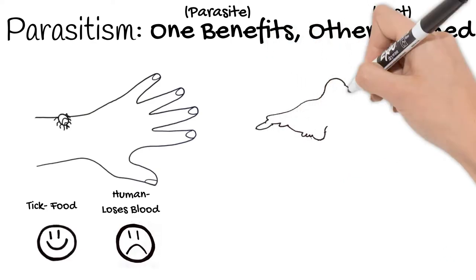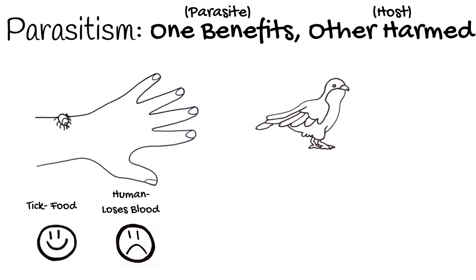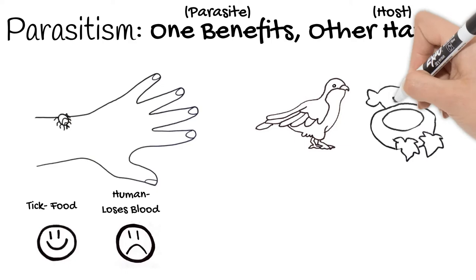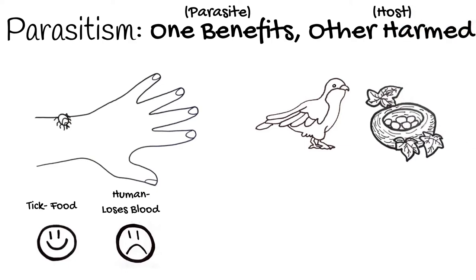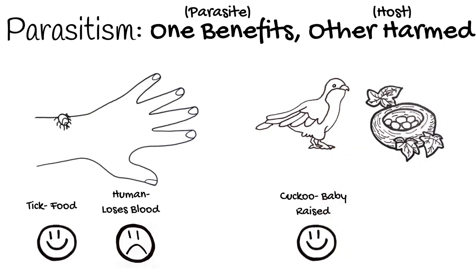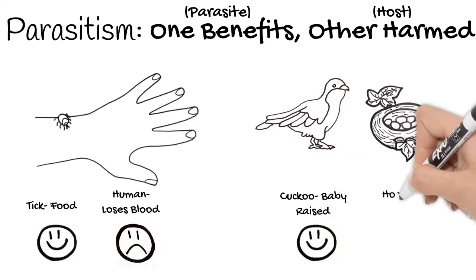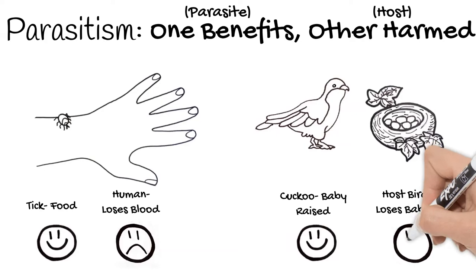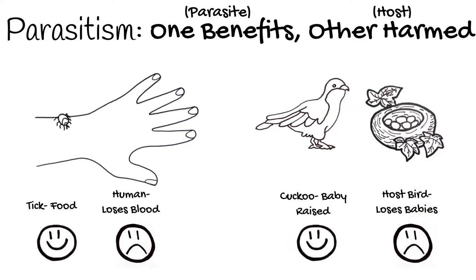Another example of parasitism is the cuckoo bird. The cuckoo bird doesn't build its own nest, but instead lays its egg in another bird's nest. To avoid suspicion, the cuckoo bird will remove one of the original eggs. The bird that owns the nest cares for and raises the cuckoo's egg as her own, and in the meantime lost her own baby. Once the baby cuckoo hatches, it will often push out the other babies so that it gets all the food and attention of the mom bird.